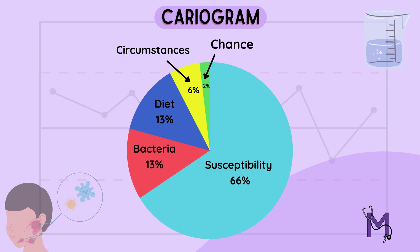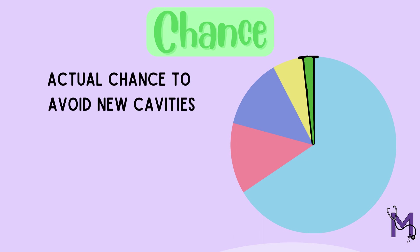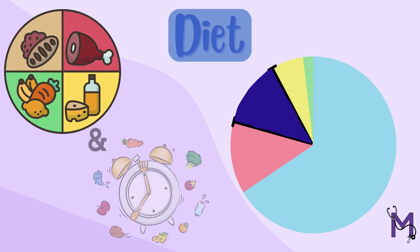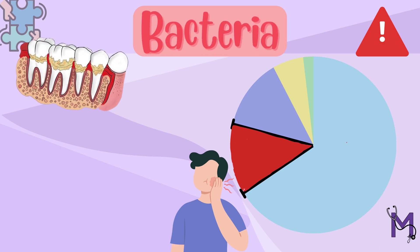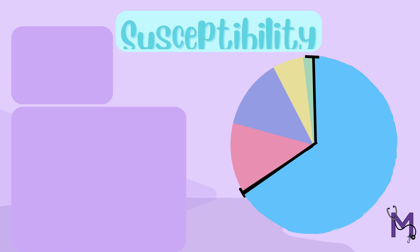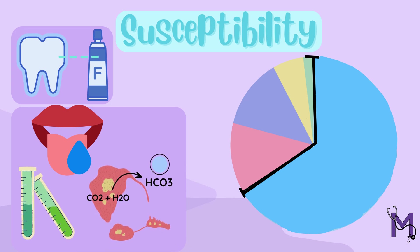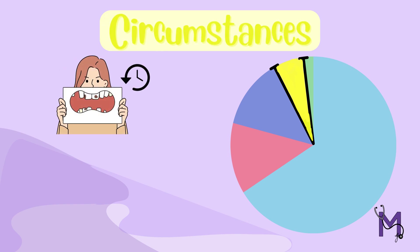Let's now look at each sector in detail. The green sector is the smallest of all and represents what's left after the other factors have taken their share — it shows an estimation of the actual chance to avoid new cavities. The dark blue sector represents diet and is based on a combination of diet contents and diet frequency. The red sector, representing the highest risk, is based on a combination of plaque and Streptococcus mutans. The light blue sector, usually the largest, is indicative of susceptibility and is based on factors like fluoride program, saliva secretion, and saliva buffer capacity. Lastly, the yellow sector suggests circumstances based on the combination of past caries experiences and related diseases.